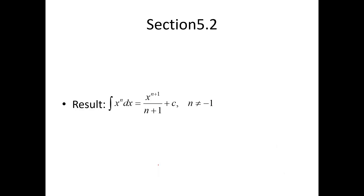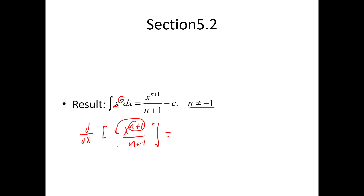Let's go through some of the basic antiderivatives. A power function is when you have a variable raised to a constant power. As long as your exponent is not negative 1, the antiderivative is simple: you add one to the exponent and divide by the new exponent. You can verify this by taking the derivative of x to the n+1 over n+1 — the exponent comes down and cancels the denominator, giving you x to the n. And don't forget your plus C — that's a common mistake.